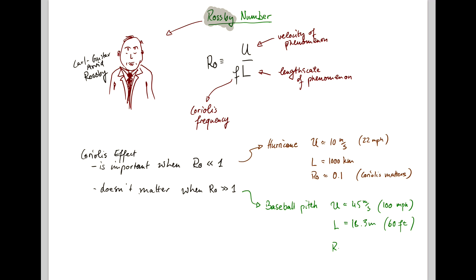The Rosby number becomes of the order of 32,000. So in this case, Coriolis doesn't matter.